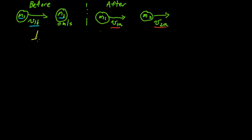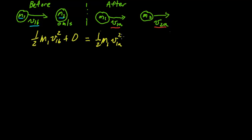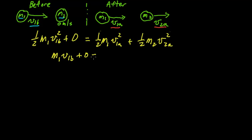We write down the kinetic energy before: one-half M1V1_before squared plus zero — there's no kinetic energy of the second object — equals one-half M1V1_afterward squared plus one-half M2V2_afterward squared. And momentum is always conserved, so M1V1_before plus zero equals M1V1_afterward plus M2V2_afterward.